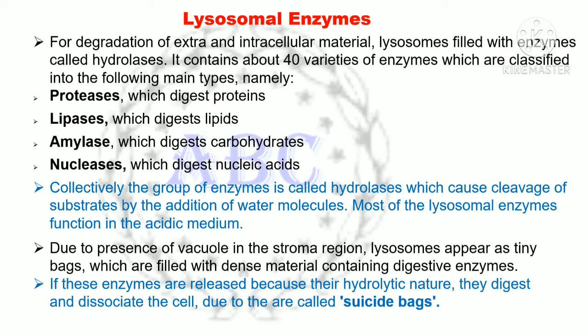Inside the membrane, the organelle contains enzymes in crystalline form. Lysosomes are filled with enzymes called hydrolases. They contain about 40 varieties of enzymes classified into the following main types: proteases which digest proteins, lipases which digest lipids, amylases which digest carbohydrates, and nucleases which digest nucleic acids. Collectively this group of enzymes is called hydrolases, which causes cleavage of substances by the addition of water molecules.